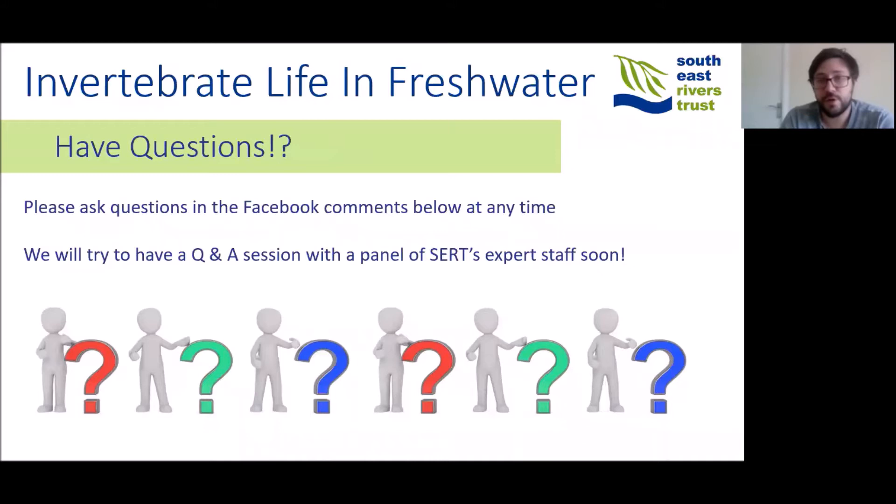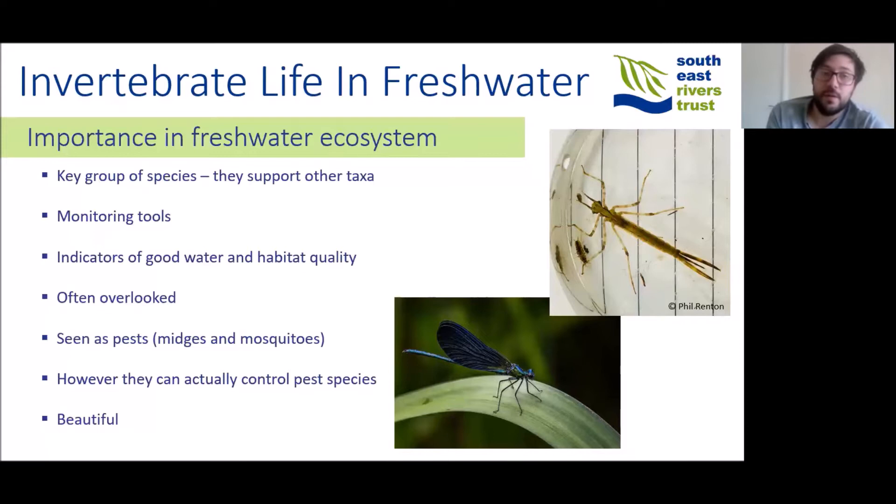Starting with their importance in the freshwater ecosystem: there are key groups of species that support other taxa as a food source and as predators. They also process nutrients that enter freshwater habitats in the form of leaf litter and other organic particles. In the environmental sector, we use them as a monitoring tool to give us an indication of water quality or habitat quality.